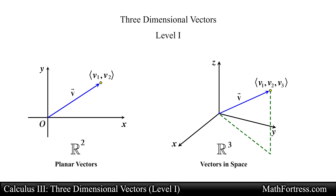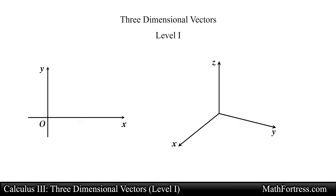The transition from planar vectors to vectors in space requires the addition of a third component in order to represent the direction that points along the z-axis of a three-dimensional coordinate system. For example, the position vector with an x-component of 2 and a y-component of 3 is represented in a two-dimensional coordinate system as follows.